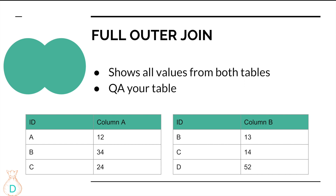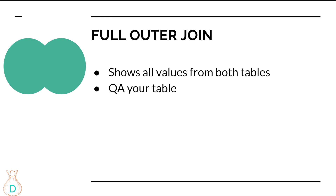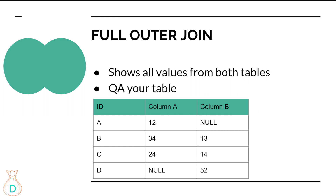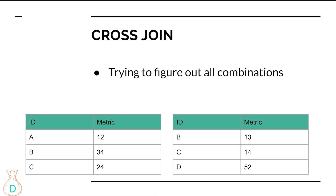A full outer join shows all values from both tables. If you have A, B, C in the first table and B, C, D in the second, you'll show A, B, C, and D with all columns from both tables. I personally use full outer join a lot mainly for auditing queries or cross-checking differences between two tables. If a column doesn't have an ID, it will just show NULL — meaning blank.